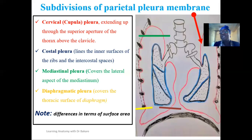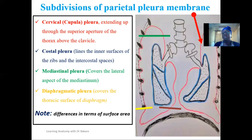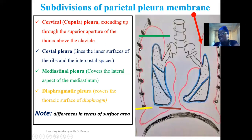We should note the differences in surface area. The costal pleural takes the largest in terms of space among the subdivisions of the parietal pleural. Because the ribs extend from the posterior parts at the vertebral column down to attach on the sternum, this forms a rounded presentation, which means the costal pleural would take the largest surface area of the subdivisions of the parietal pleural.